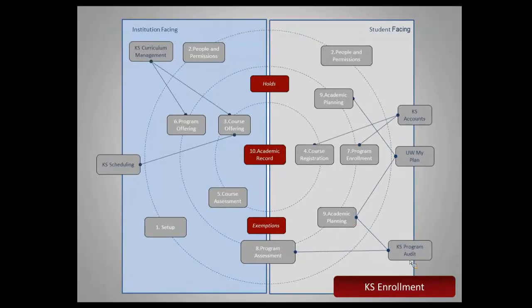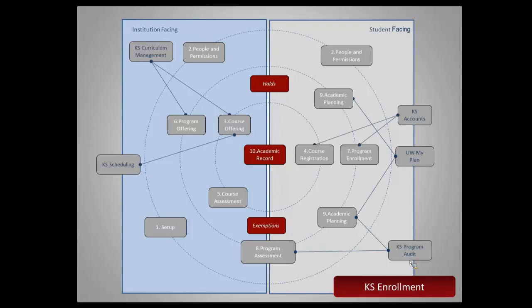So if you recall this diagram, which shows the application and the module at a glance, the area we're focused on now is really what's at the core of the enrollment module, which is academic record. And then we also have holds and exemptions, which cut across all the different functional areas. There's both a student-facing aspect — students will request exemptions, institutions will grant those exemptions, institutions will place holds on students, and students will request that those holds be removed or work to resolve them.